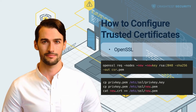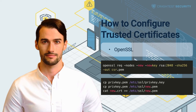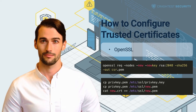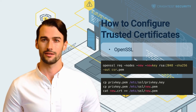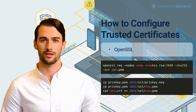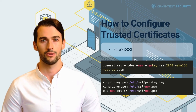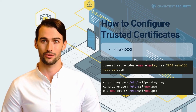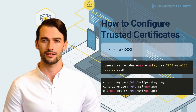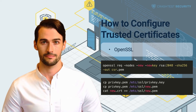OpenSSL: You can manually create a new secure certificate and a certificate signing request. For example, to generate the certificate with a private key, run the CSR code shown in the video. Answer all questions according to your needs. Then send the CSR file to your certificate authority.